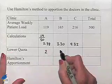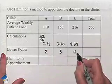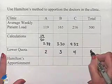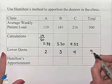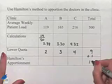So we're going to have 2, 3, 4. Notice that this gives us a total of 9. In Hamilton's method, because we're going to need one more in order to get a total of 10, we're going to have to determine which clinic gets the extra person.